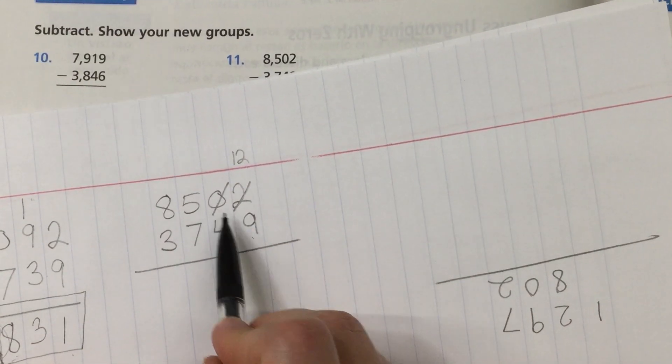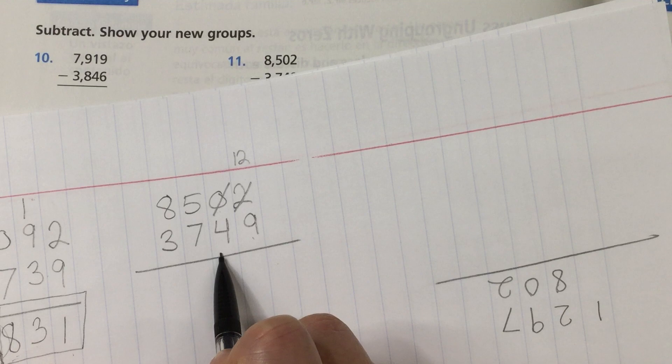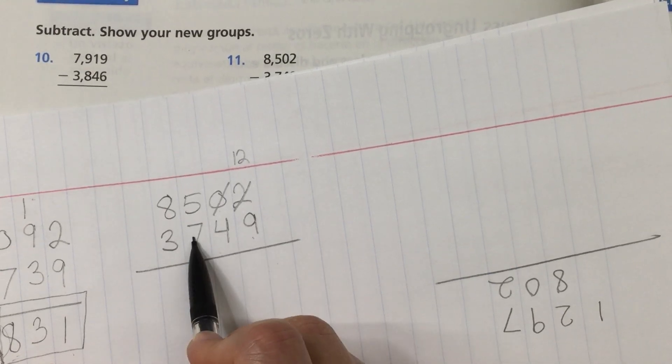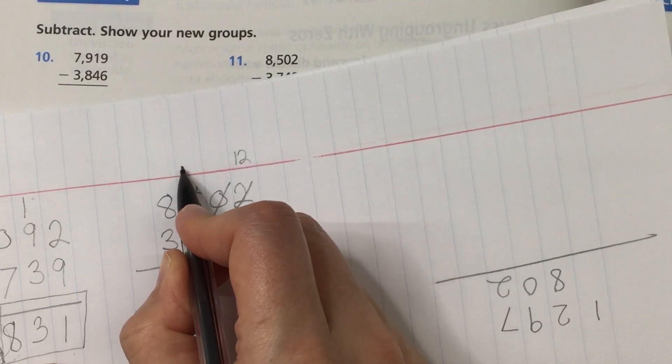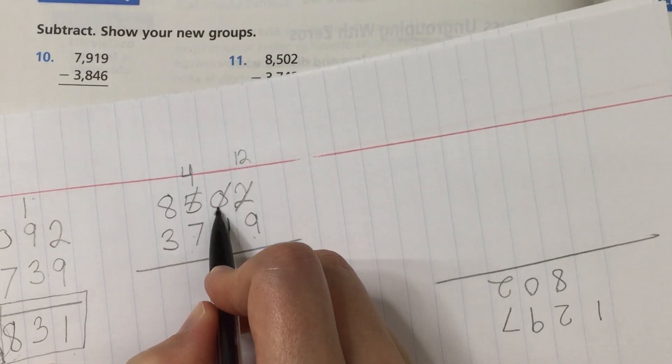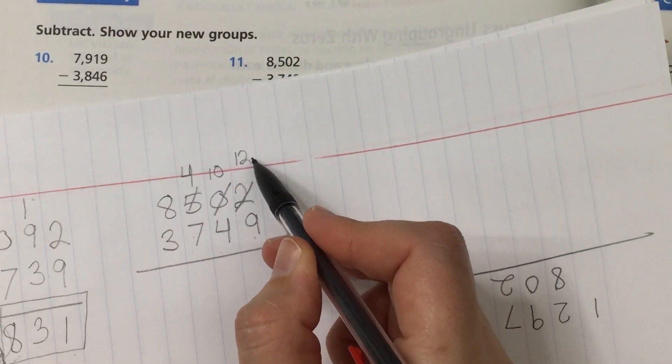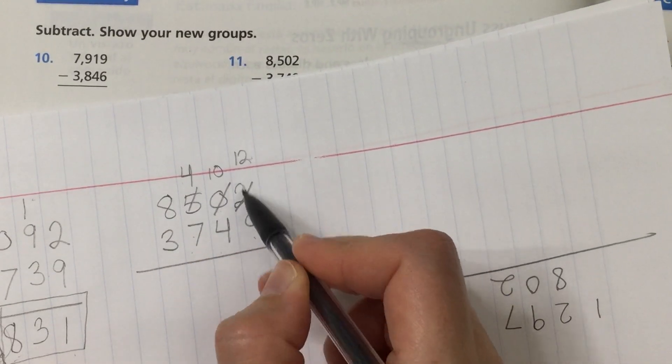I have to borrow but there's nothing in the tens place to borrow. So I have to go further to the hundreds place and the tens will borrow from the hundreds. So that 5 has to go down to a 4 because I borrowed that over here to make this 0 a 10. But don't forget I still need to make this 2 a 12.